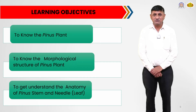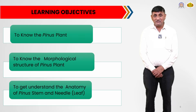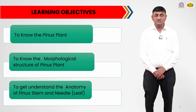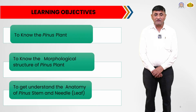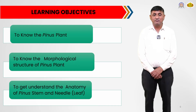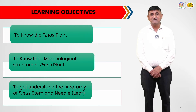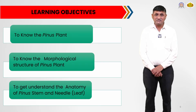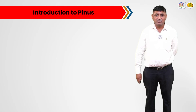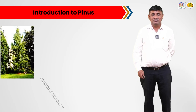The learning objectives of today's topic are: we have to know the Pinus plant as one of the gymnosperm plants, understand its typical morphological features, learn more about Pinus with concern to its morphological structure, and understand the anatomy of Pinus stem and anatomy of the needle — that is the foliage leaf of Pinus.